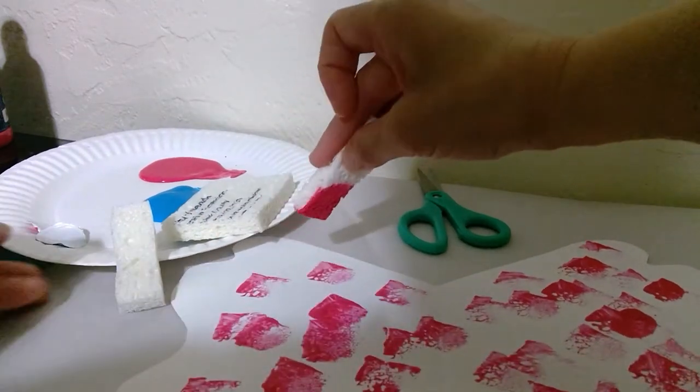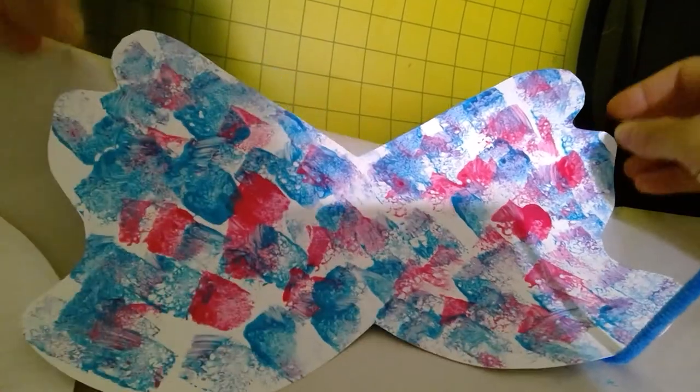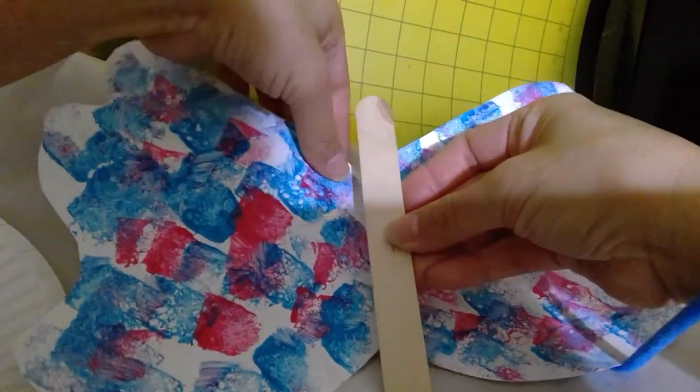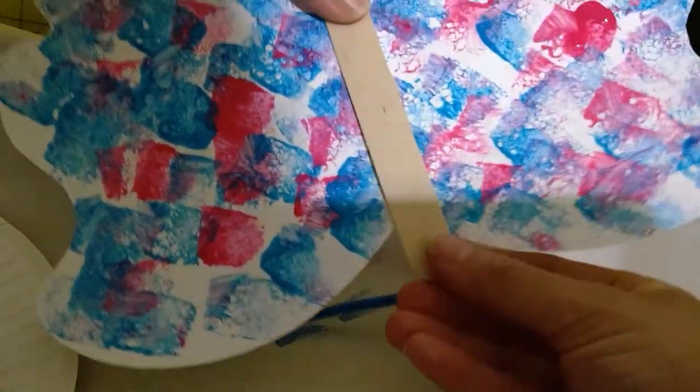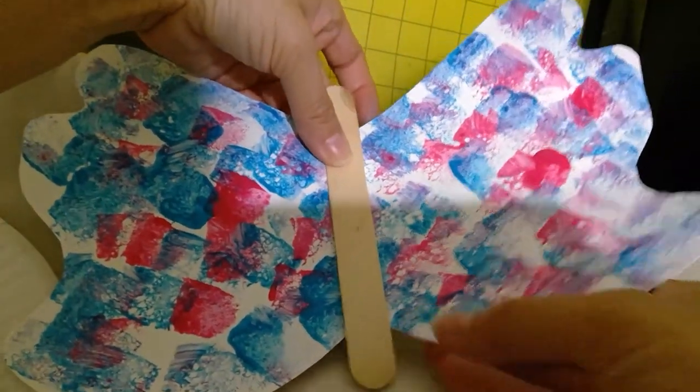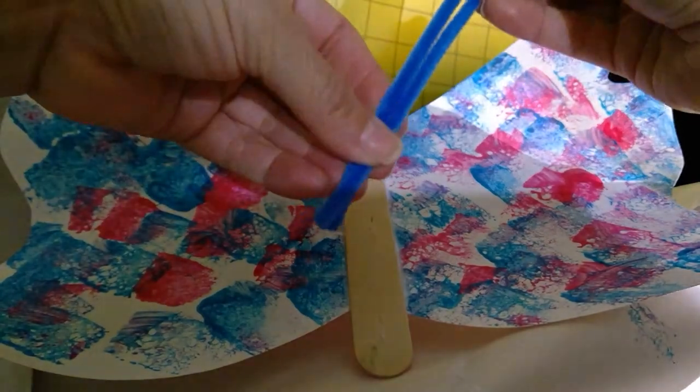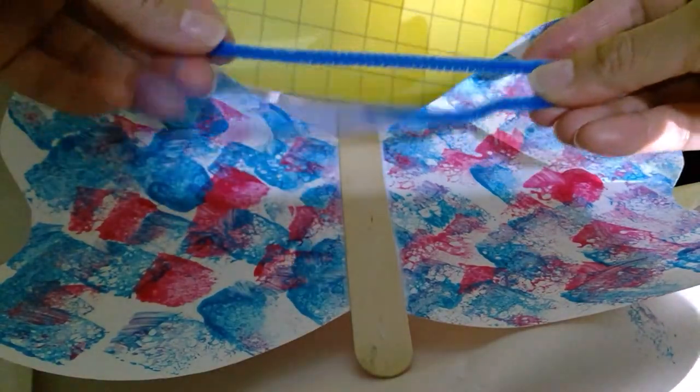Our butterfly should be dry right now. The next thing is to glue on the craft stick here in the middle. After we're done gluing the craft stick, we're going to grab our pipe cleaner and fold it in half so we could cut it from here, from the middle, because this is going to be the little antennas for the butterfly.